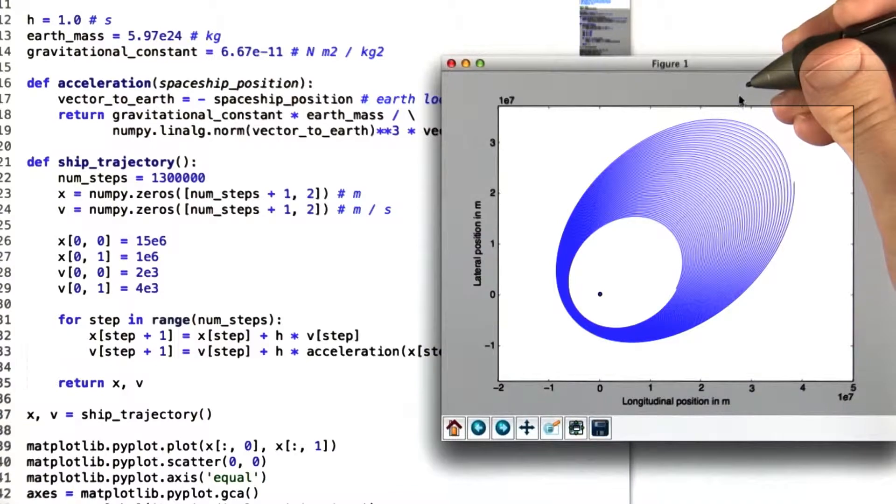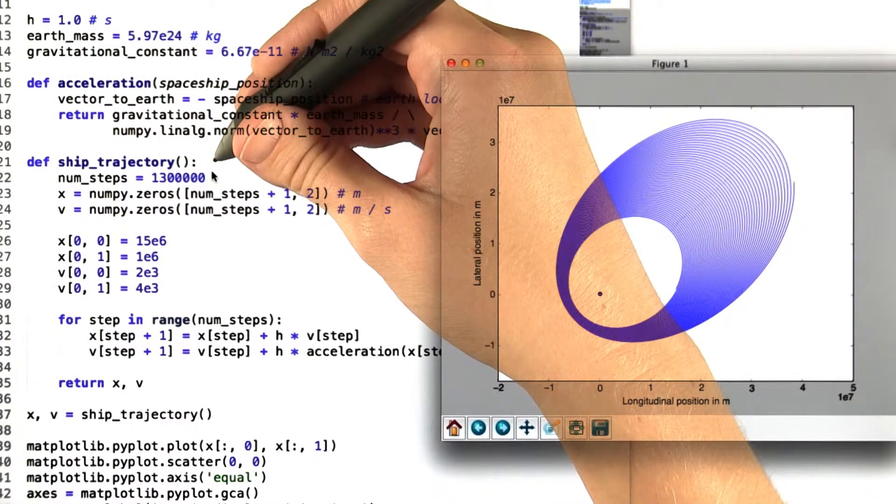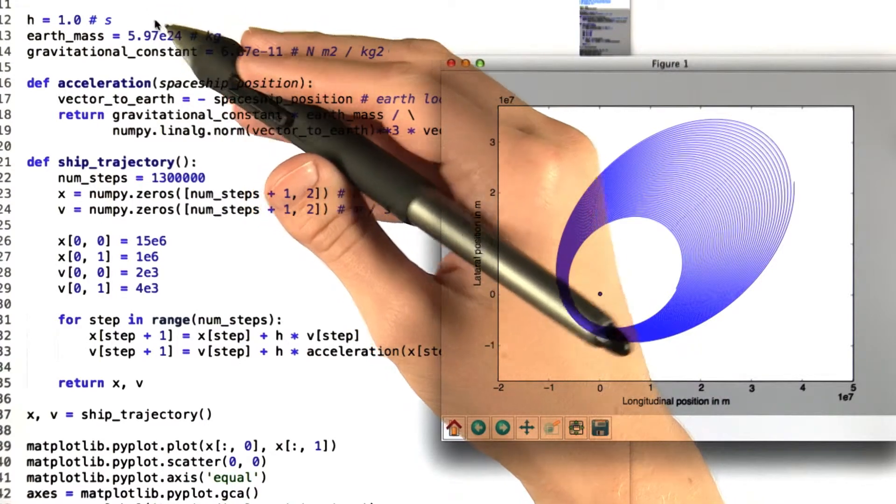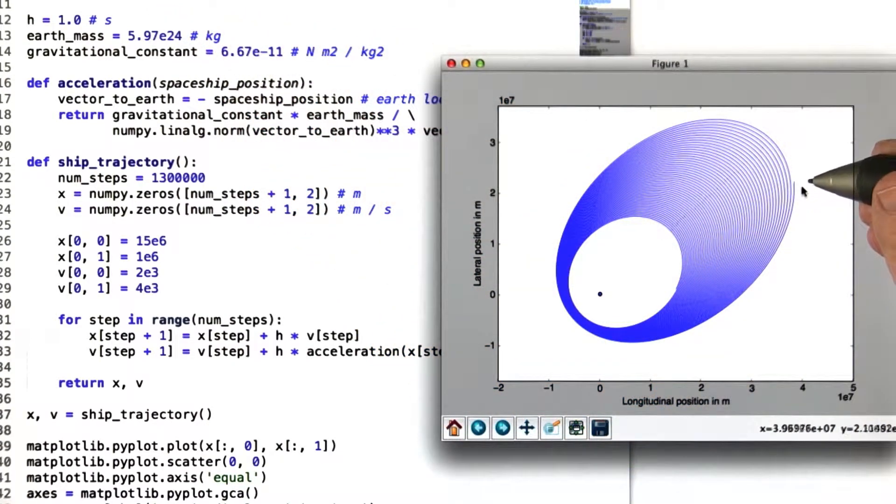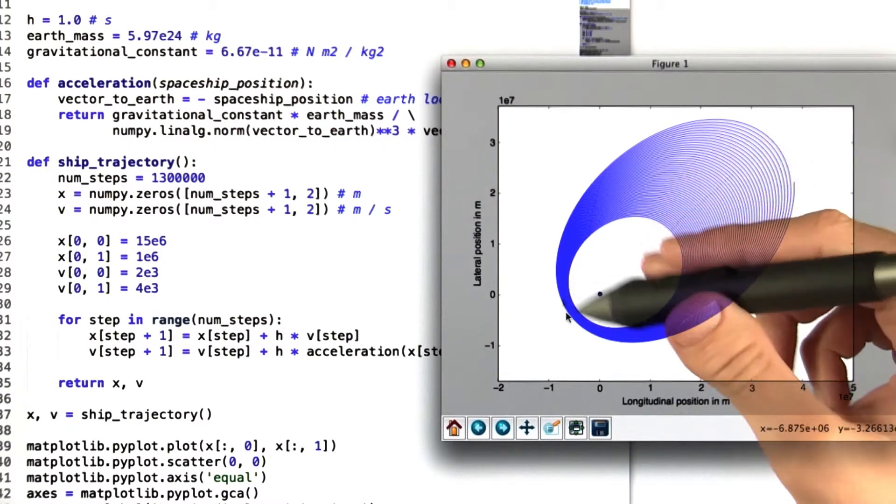We've done something pretty cool right here. We've changed the number of steps from 13,000 to 1.3 million. This means that since we've kept the step size the same, this picture shows what the position of the spaceship would be like after much more time has passed, after it's gone through many, many orbits.